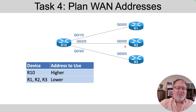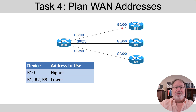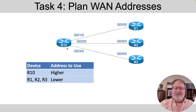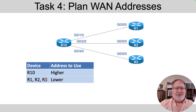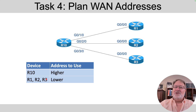For WAN links, you have two addresses — one router on each end of the link. With R1, R2, and R3 on the far right and Router R10 on the left, give R10 the higher IP address in the subnet, and give the branch routers on the right the lower IP address in the subnet. Write that down to plan those numbers.